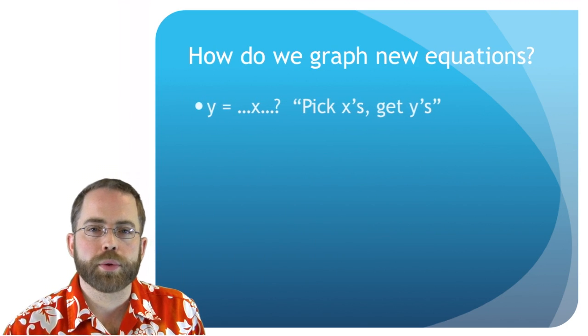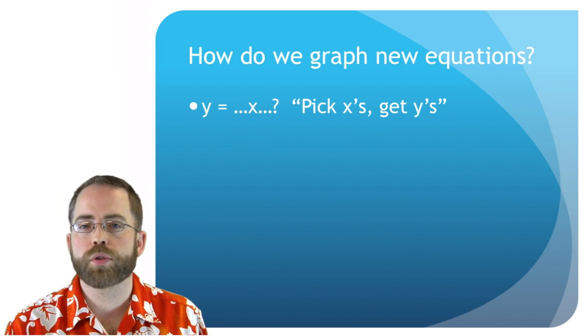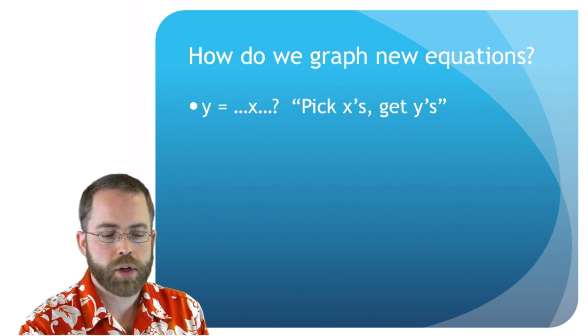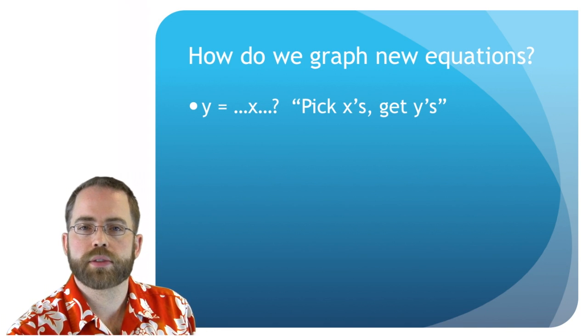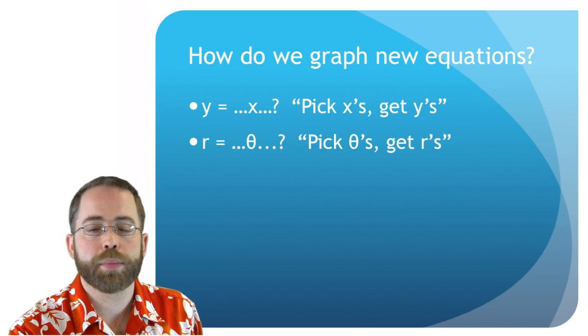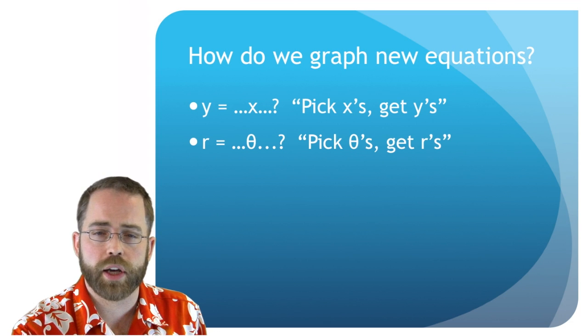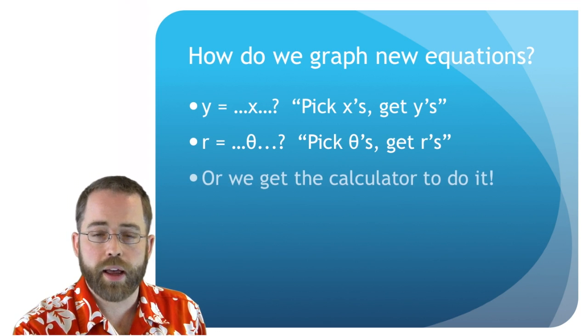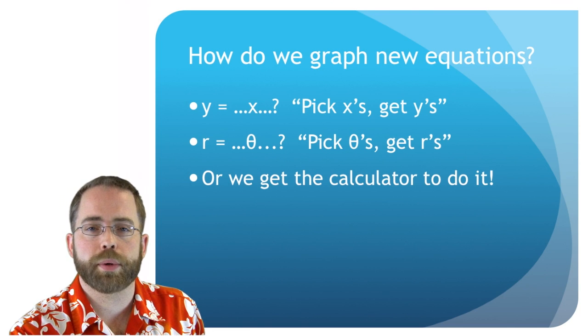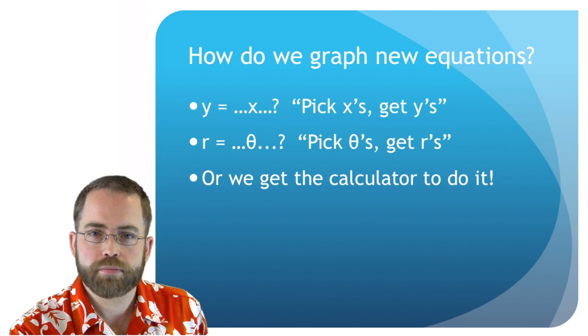So general principles for how to graph things. You get to use your calculator. But there are a few that aren't obvious how to get them in the calculator. We pick some x's and we get y's. That's what we did in rectangular. Well, in polar, we're going to pick some thetas and get some r's. Very similar kind of operation. And the calculator will help us. But we can still find individual spots on the graph, individual points, because we know how to plug in.